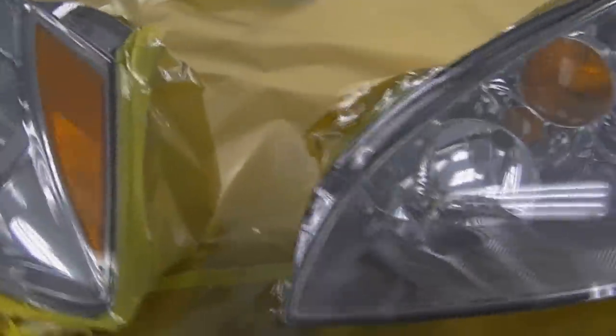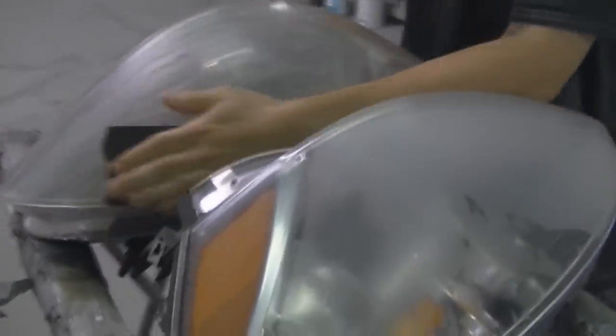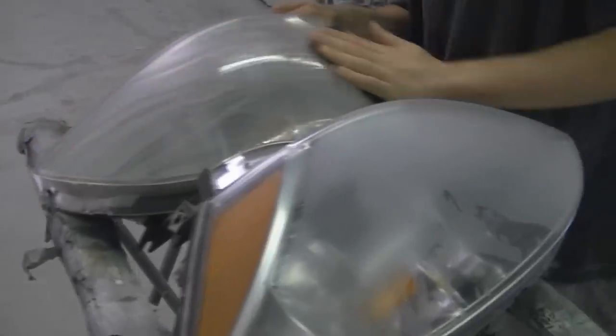So the lights on this Nissan Altima have started to fade from UV abuse and they have a bit of scratching on them but generally just faded quite a bit. We are going to bring the shine back up rather than polishing like in the last video. What we're going to do is apply the clear.